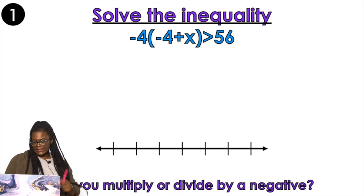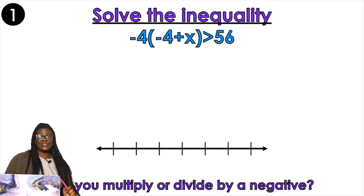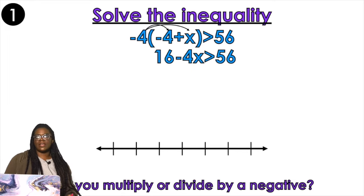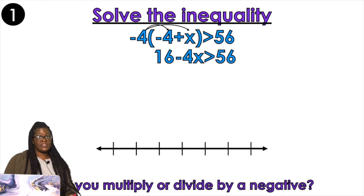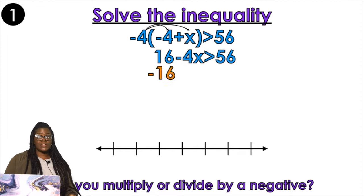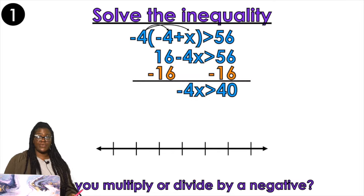So solve the inequality. What you're going to do first is you are going to distribute. So that's going to be positive 16 minus 4x is greater than 56. So after I distribute, I want to get rid of my constant. So negative 16, negative 16. So I'm going to do negative 4x is greater than 40.